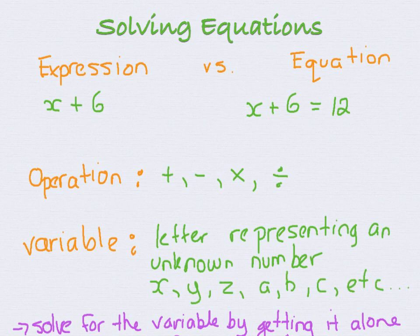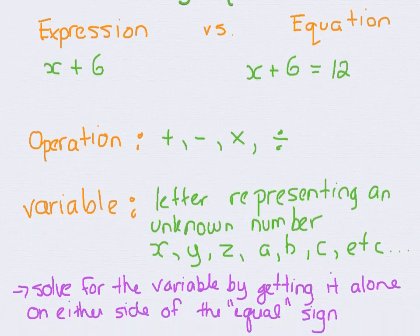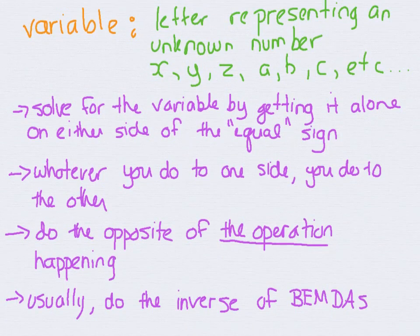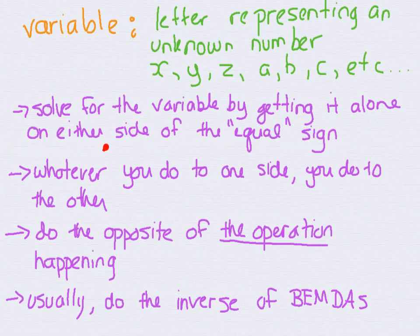So let's talk about some things that we need to keep in mind when we are solving for this type of equation. The first thing is that the purpose of an equation is to solve for the variable by getting it alone. And when I mean by getting it alone, I mean there has to be nothing around it or attached to it. You solve for the variable by getting it alone on either side of the equal sign.